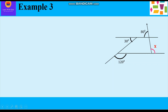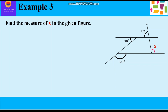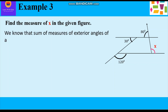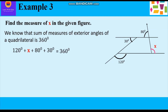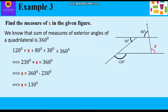Now let us take up Example 3. Find the measure of x in the given figure. A figure is given in which exterior angles are mentioned and one angle is x, which we have to find. We know that the sum of exterior angles of a quadrilateral is 360 degrees. So: 120 degrees plus x plus 80 degrees plus 30 degrees equals 360 degrees, giving 230 degrees plus x equals 360 degrees, so x equals 360 minus 230, which equals 130 degrees.